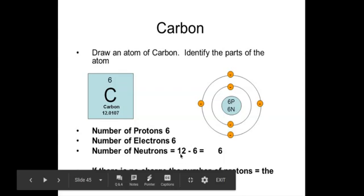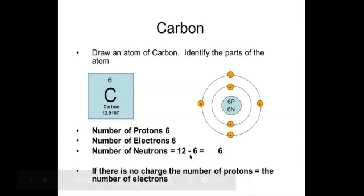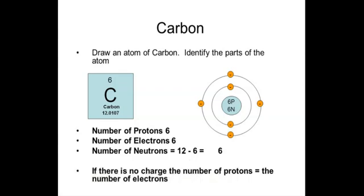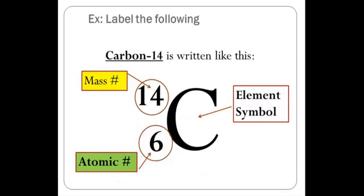How do we get the number of neutrons? The number of neutrons is obtained by subtracting the atomic number from the mass number. So: mass number minus atomic number equals the number of neutrons. Take note of that.